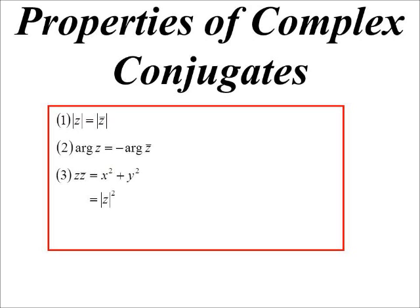There's that important z times z conjugate. The difference of two squares which becomes the sum of two squares. The real part squared plus the imaginary part squared is what we had been calling it. But now we know about modulus. We've got a much neater way of saying, we can say it's just the modulus squared.